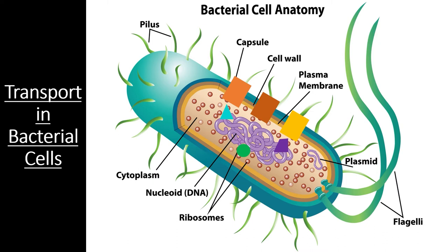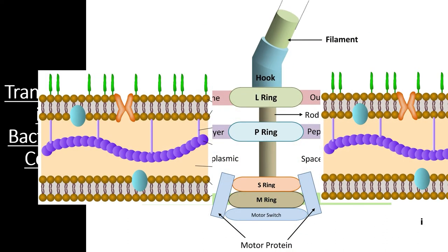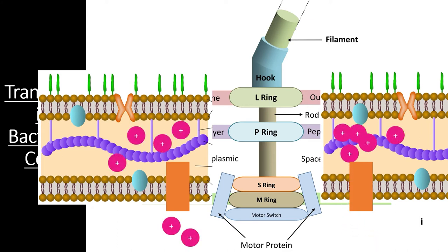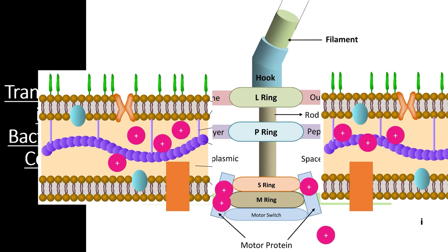But even bacterial cells use active and passive transport for more than just collecting nutrients. Consider the flagella — even this mobility structure is driven by interactions between active and passive transport systems. On the inner membrane of the bacteria are a number of active transport proteins that are constantly pumping protons into the intermembrane space, building up a gradient which stores energy. Then some of these hydrogens are allowed to passively move through the motor proteins, transferring energy to spin the flagella, allowing the cell to move.